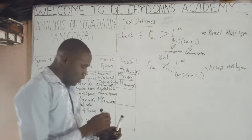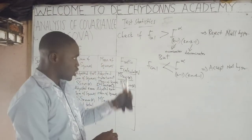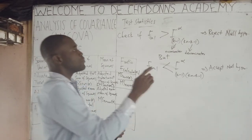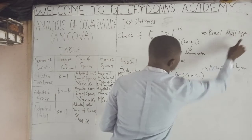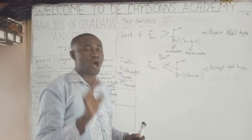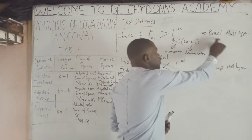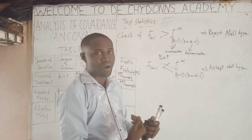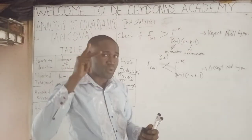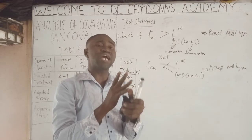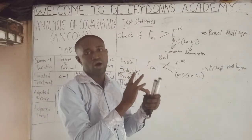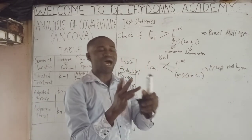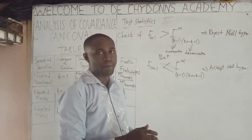From the question, they will tell you what your null hypothesis is and what the alternative hypothesis is. There are two types of hypotheses: null and alternative. If you reject the null hypothesis, it implies you are accepting the alternative hypothesis. If you accept the null hypothesis, it means you are rejecting the alternative hypothesis.